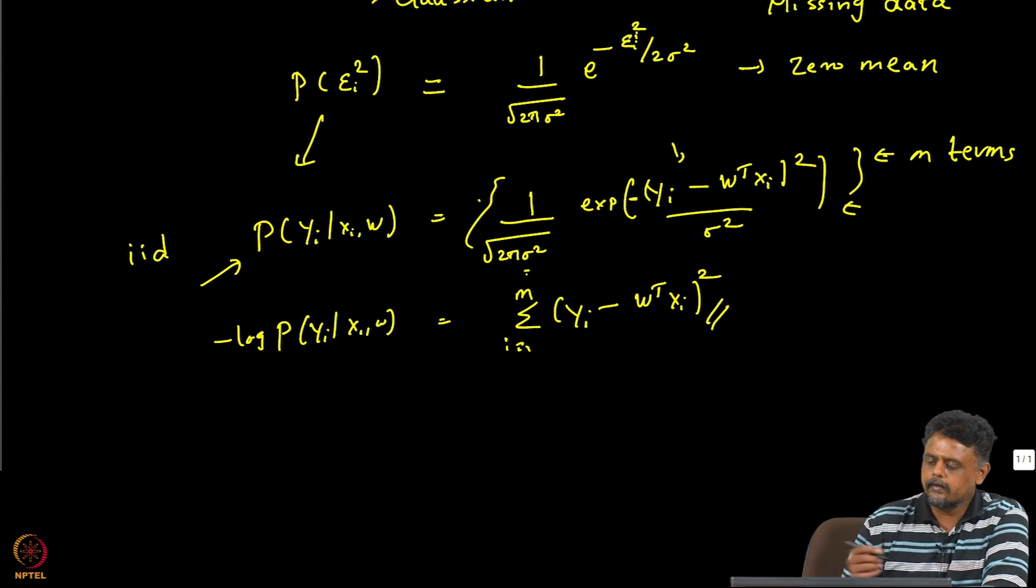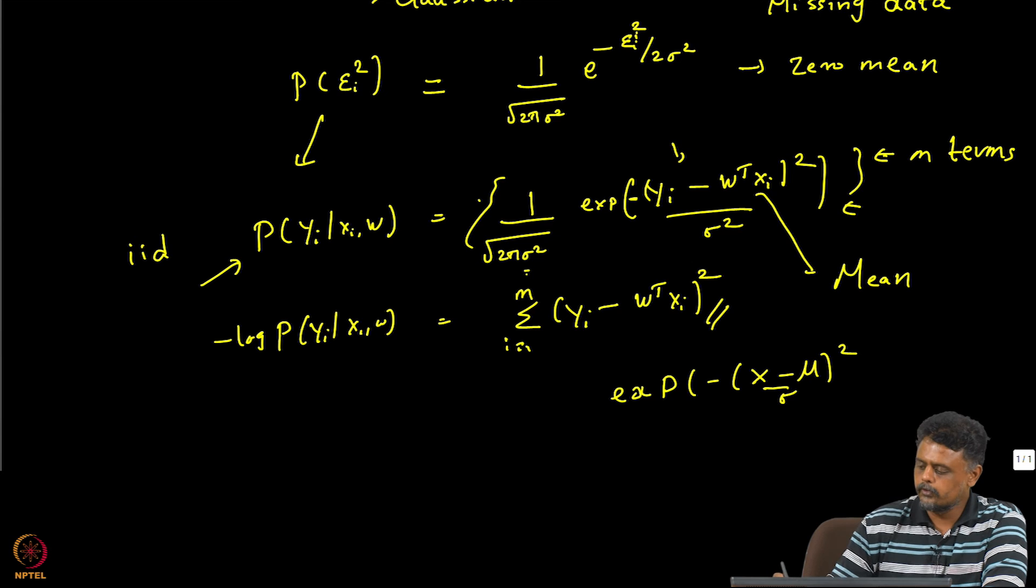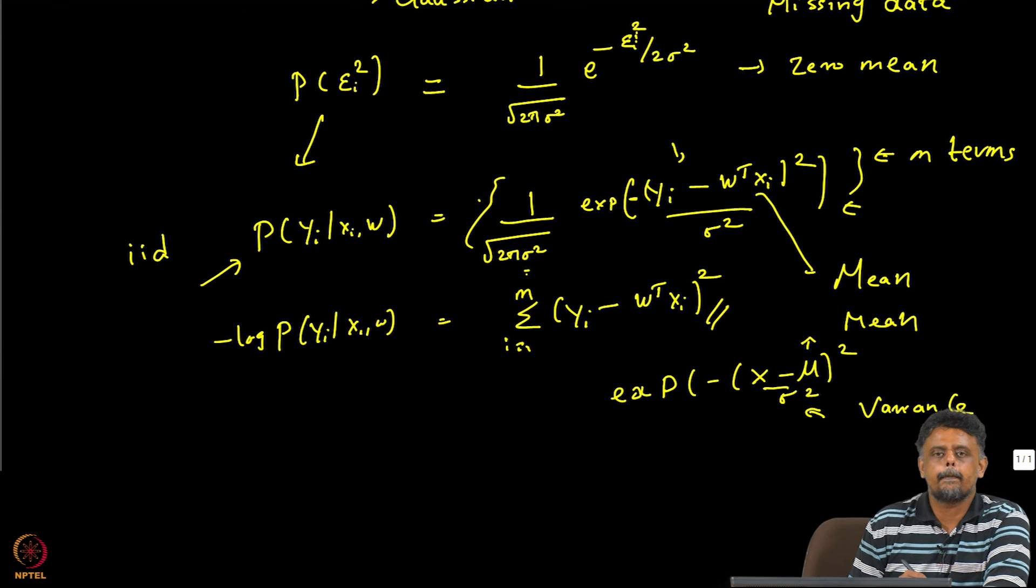See another way of looking at it is, even if you assume that our data is Gaussian distributed, what we are modeling here is the mean. If you remember the form of the Gaussian distribution, then the Gaussian distribution form was exponential (x - μ)² over σ². So this is the mean and this is the variance of the distribution.